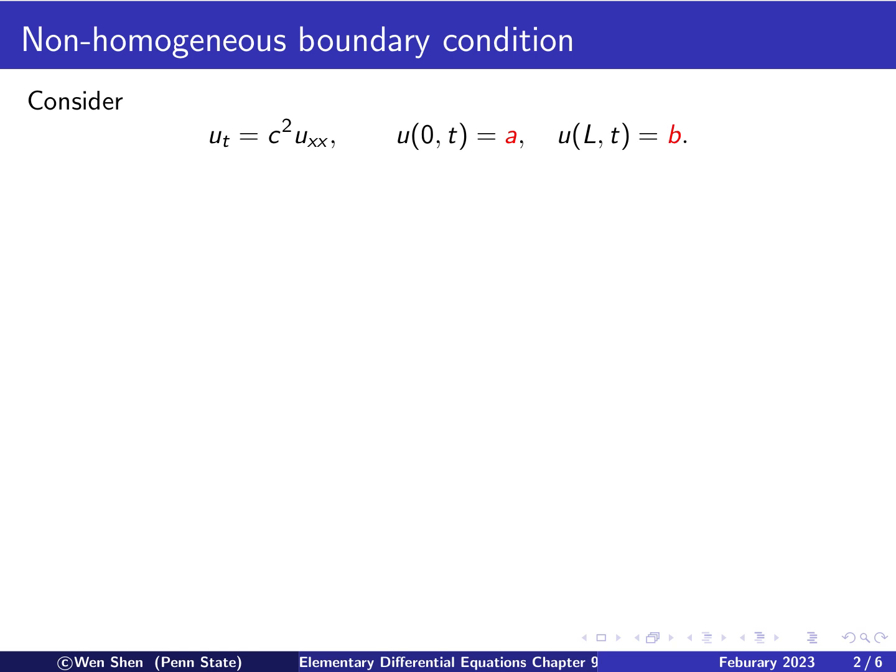Previously we studied heat equation with homogeneous boundary condition and also with different types of boundary conditions, meaning Dirichlet type and Neumann type, where the function's value or its derivatives are given to be zero. And in this video we will look at the case where the boundary conditions are not homogeneous.